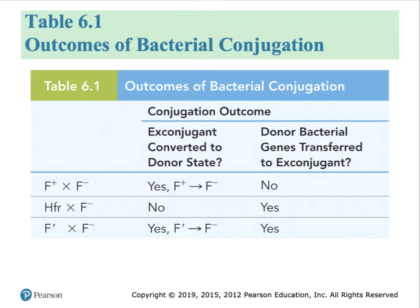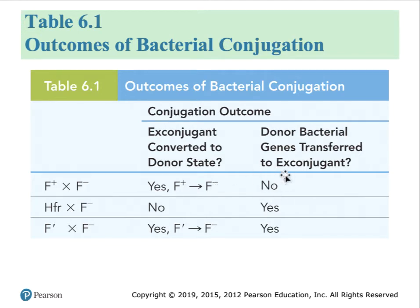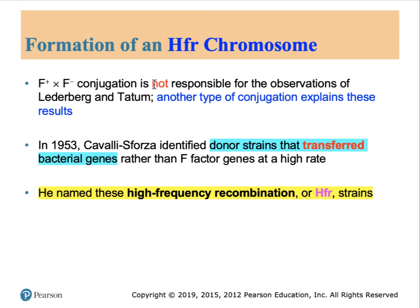Table 6.1 summarizes the outcomes of different mating types. Focusing on the first row: a bacterial cell that's F-plus, when incubated with F-minus cells, results in transfer of information from the F-plus to the F-minus. In the process, none of the bacterial genes are transferred — just the genes on the F-plasmid. This F-plus and F-minus conjugation is the normal, most common method by which F-plasmids are transferred between bacteria.